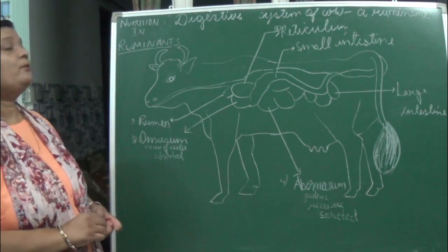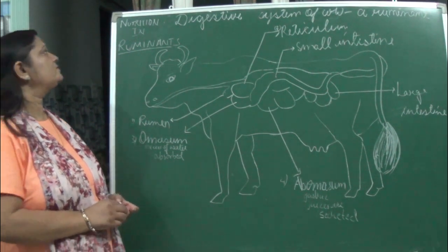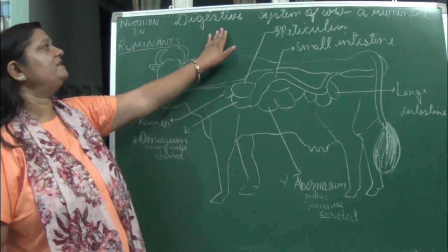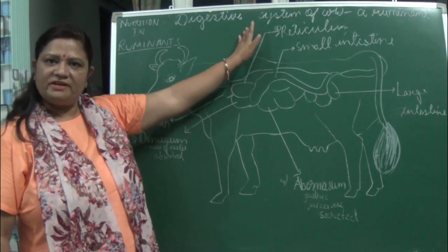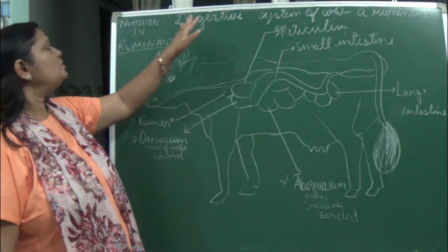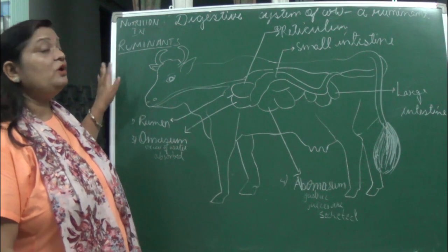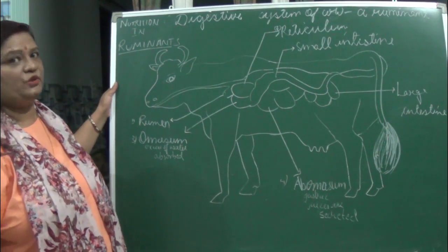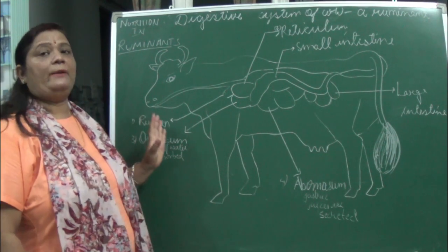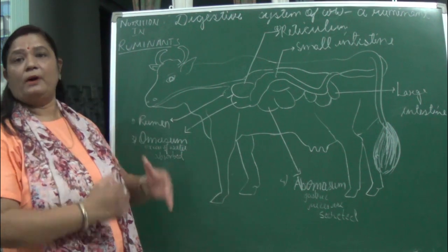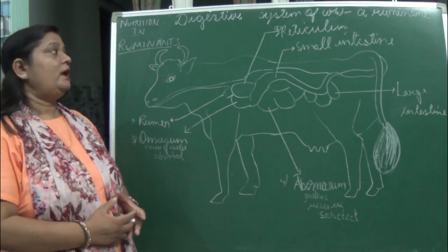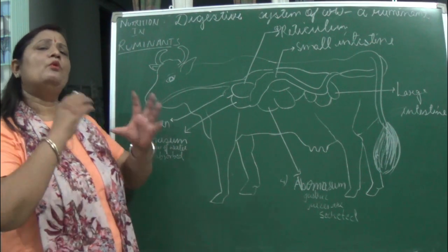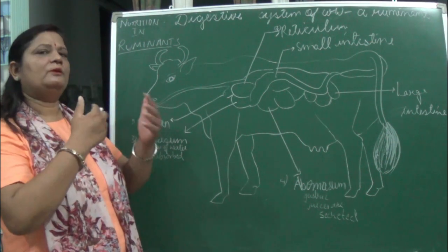Hello students, we are going to study nutrition in ruminants. In this we will be covering the topic of the digestive system in cow ruminant. So what is a ruminant? Actually, all the grass-eating animals are known as ruminants. They have got a big large mouth and they feed on grass.